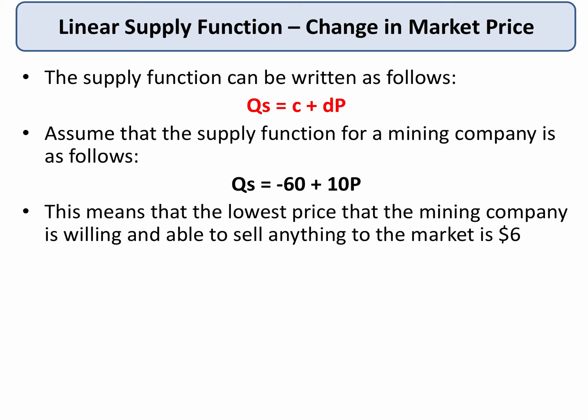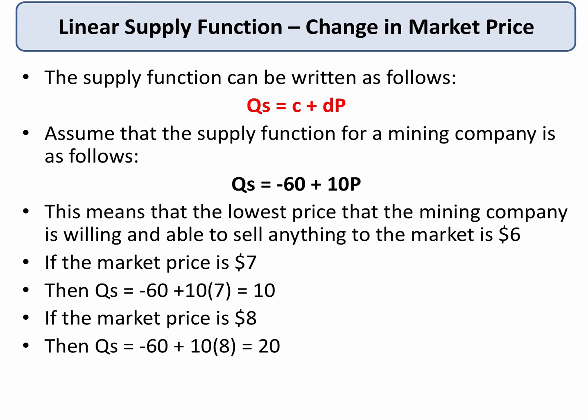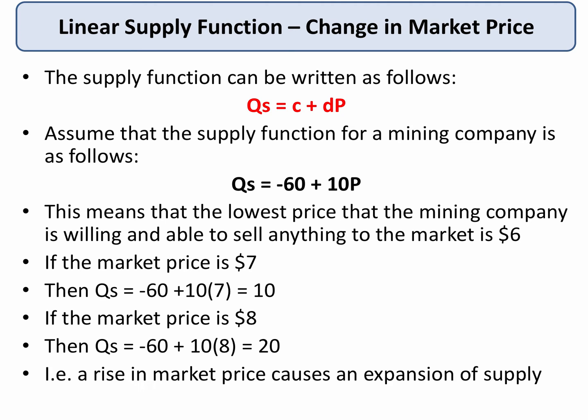At a price of $6, 10 times 6 is 60, so supply will start to become positive. If the market price is $7, putting the numbers into the equation, supply will be minus 60 plus 10 times 7, which equals 10. If the market price is $8, quantity supplied goes up to 20. This shows that an increase in the market price causes an expansion of supply, other factors remaining the same — hinting at the law of supply and the upward sloping supply curve.